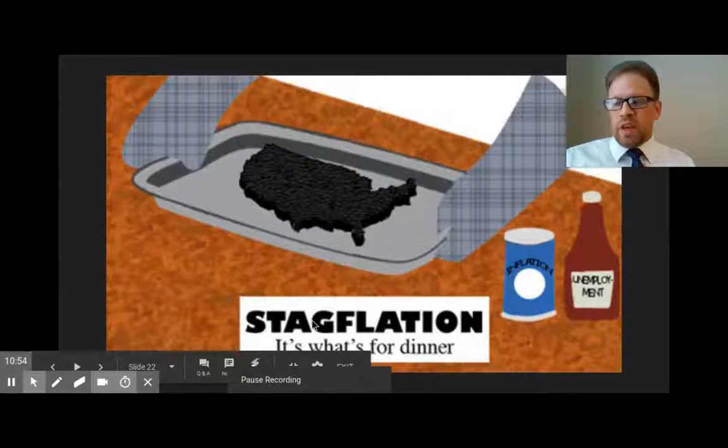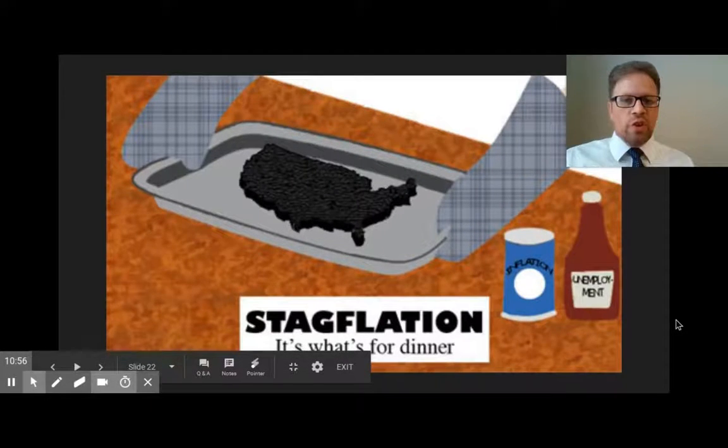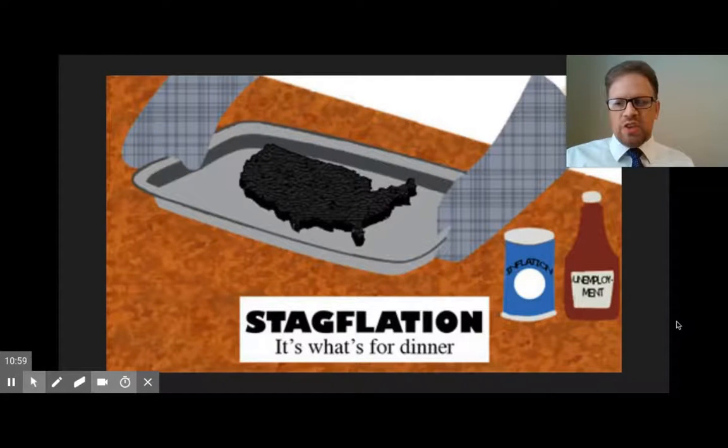Something else that can happen is a situation called stagflation - the combination of high unemployment and high inflation in the same time period. This doesn't happen frequently, but it has happened on occasion. Notably, in the 1970s, we had an issue of very high unemployment and high inflation going on at the same time.